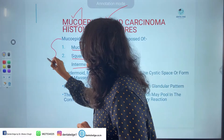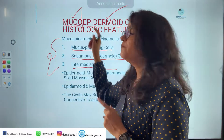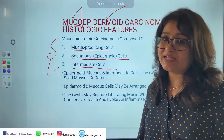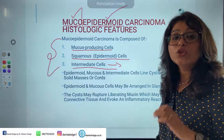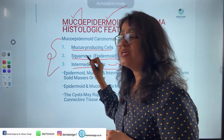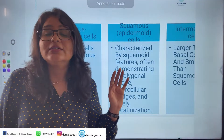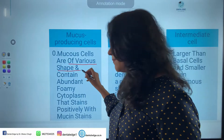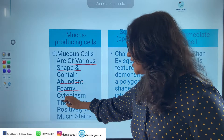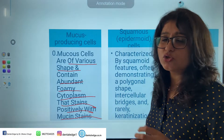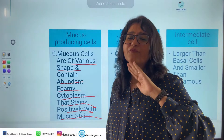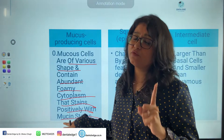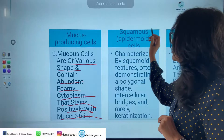There are mucus producing cells, squamous or epidermoid cells, and intermediate cells. The intermediate cells are thought to be the progenitor of both mucus producing and squamous cells. The mucus cells are of variable shape and contain abundant foamy cytoplasm that stains positively with mucin stains. The nucleus is pushed towards one end because of the mucin content.